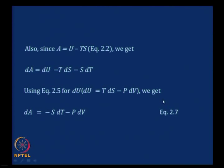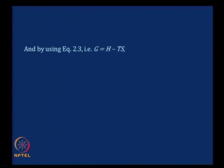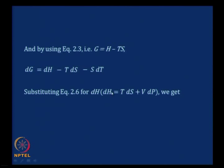The only other thermodynamic variable defined so far is Gibbs free energy G. By definition, G equals H minus TS. Following the same scheme, dG equals dH minus T dS minus S dT. We know dH equals T dS plus V dP (equation 2.6). Substituting, the T dS and minus T dS cancel, leaving dG equals minus S dT plus V dP, which is equation 2.8.